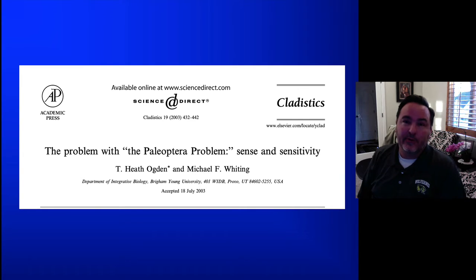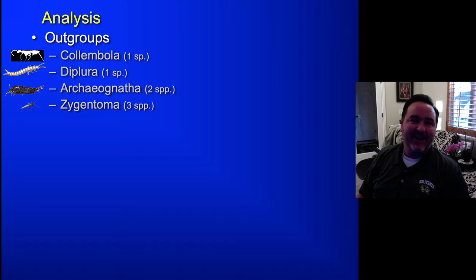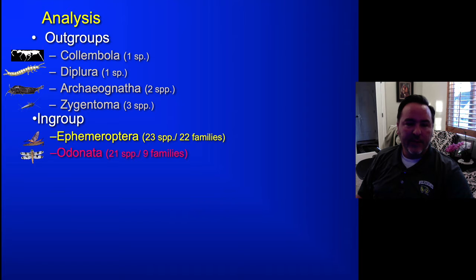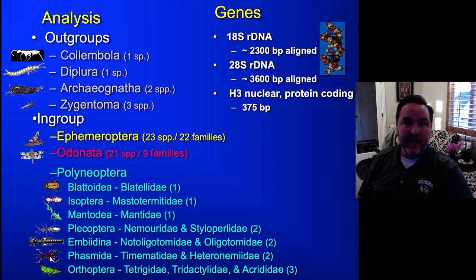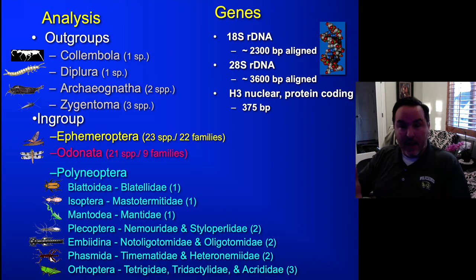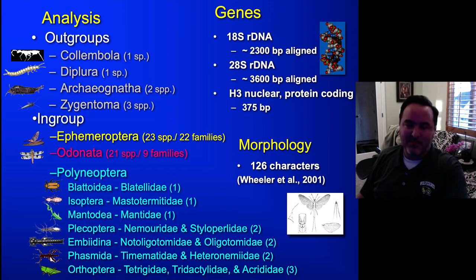I then produced my own analysis, published in Cladistics — it's called 'The Problem with the Palaeoptera Problem: Sense and Sensitivity.' I did an analysis with a bunch of outgroups: 23 species of mayflies, 21 species of dragonflies and damselflies, and a bunch of Polyneoptera representing the Neoptera lineage. I used 18S DNA and the complete 28S gene region, and added a new gene, H3 nuclear protein-coding. So for my analysis I used three genes — you are only required to use two. I also used a morphological dataset, which you are not required to do.